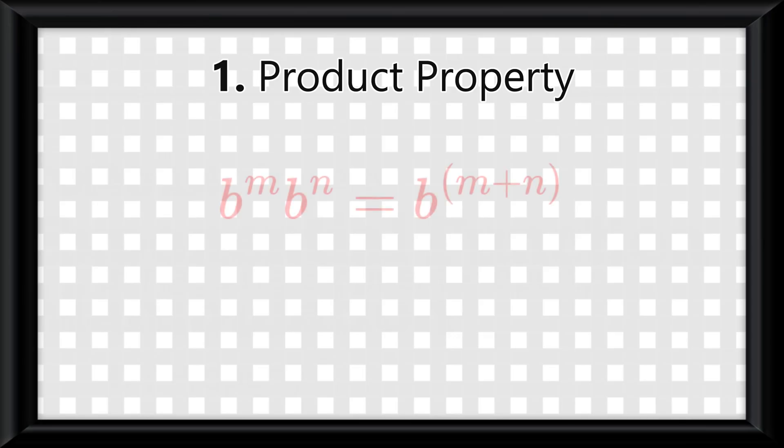The product property says that b to the m multiplied by b to the n is equal to b to the m plus n. So what to take from this is that if you multiply two values with an exponent that have the same base, or b, then you are really just adding their exponents.